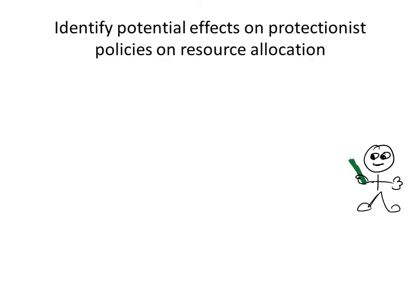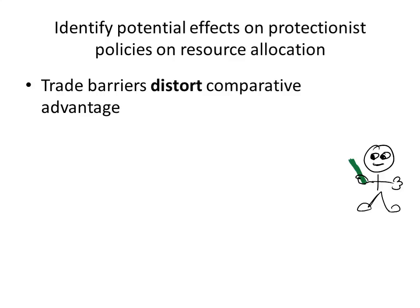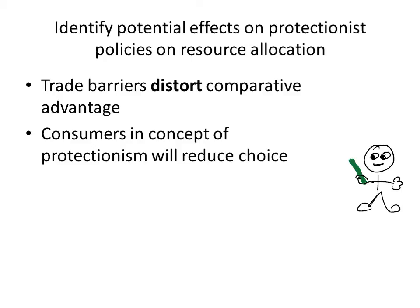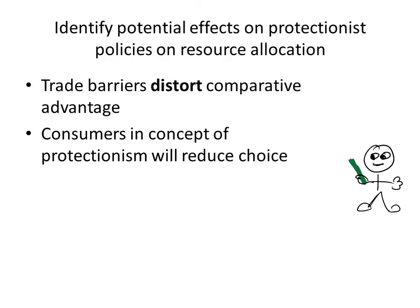Identify potential effects of protectionist policies on resource allocation. Trade barriers distort comparative advantage and reduce specialisation, leading to lower world output and lower living standards — this is inefficient resource allocation. Consumers in the context of protectionism will face reduced choice, as seen through the tariff diagram; higher prices result in less demand. If government is deploying tariff quotas or subsidies, then producers will have less incentive to become more efficient because they are protected by the government. Lastly, it is difficult to remove once these trade barriers are in place, because they will result in an adverse effect.